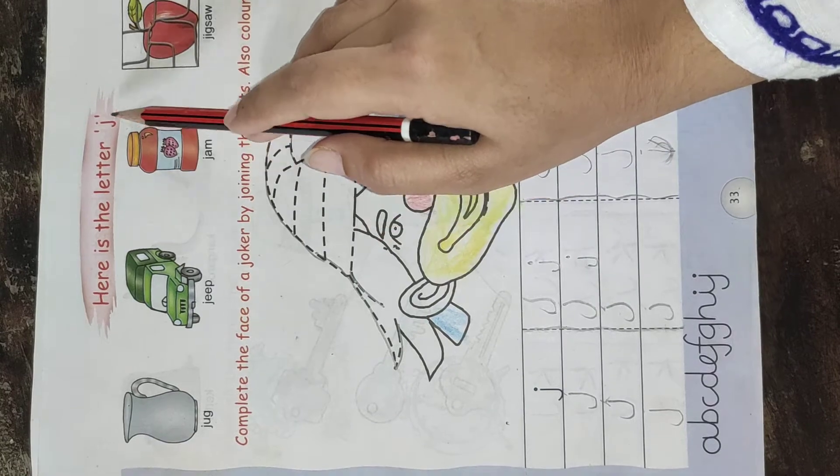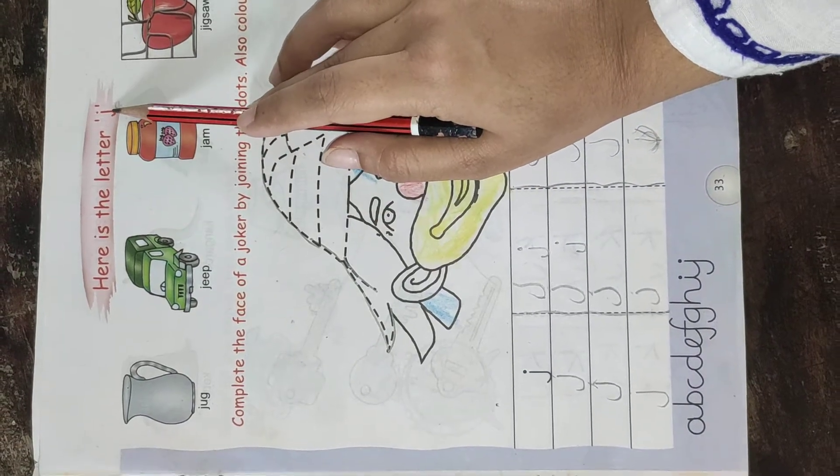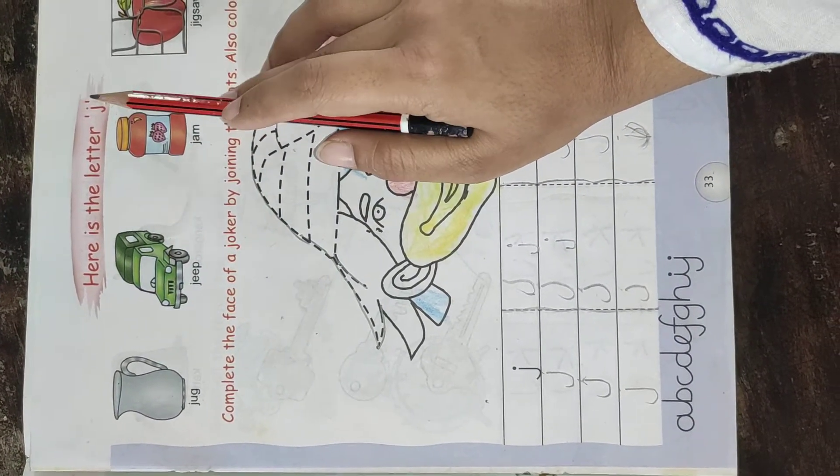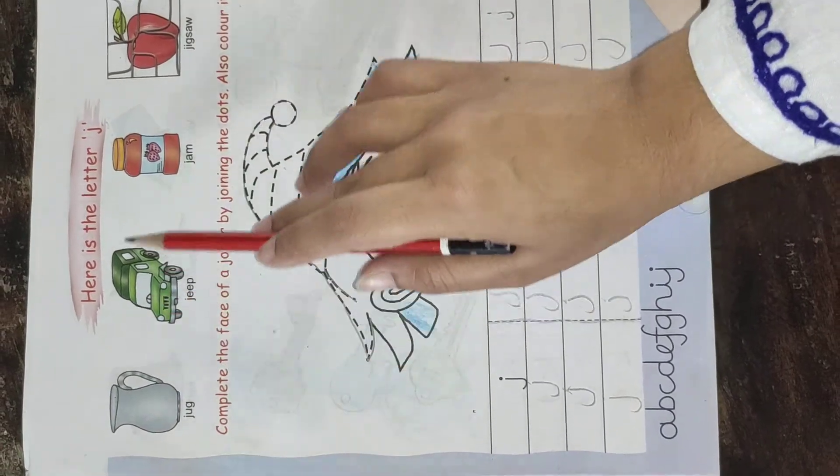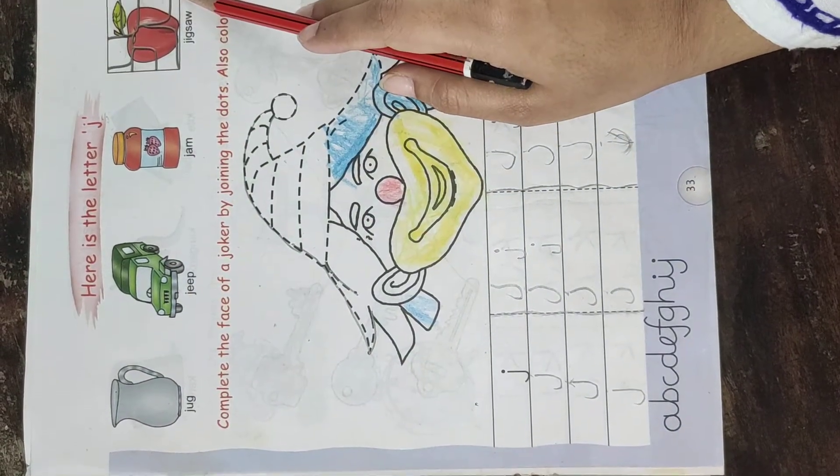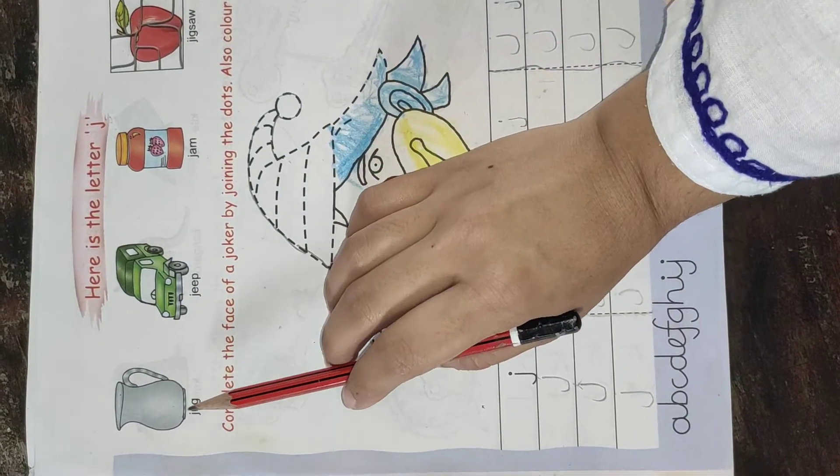Here is the letter J. Which letter is this children? J. And the sound of J is J. Children, here some figures are given with their names. So let's read these names.